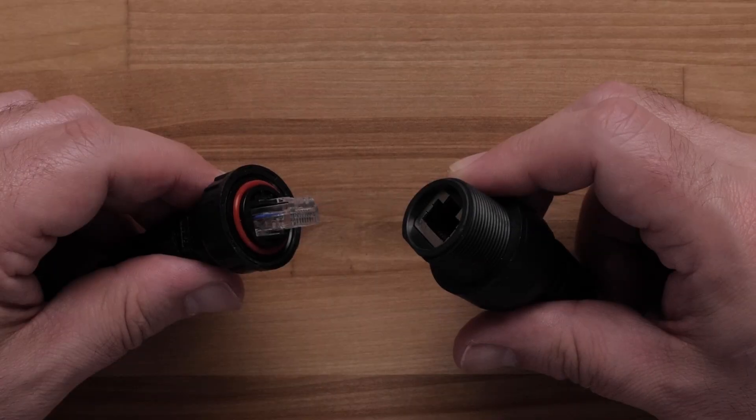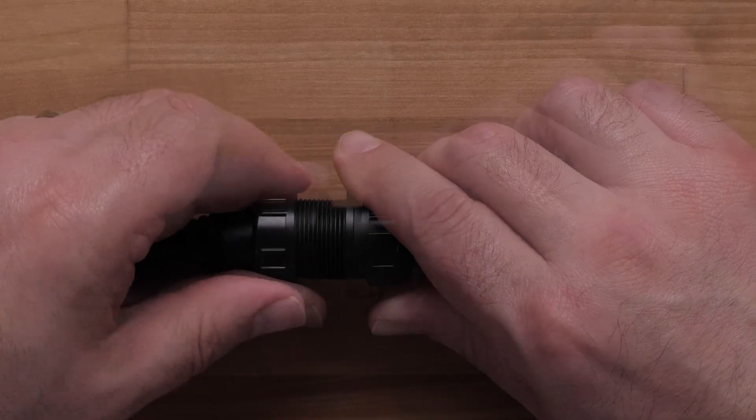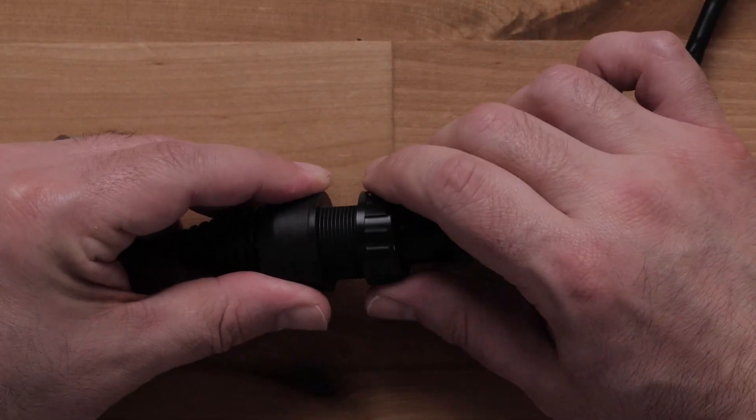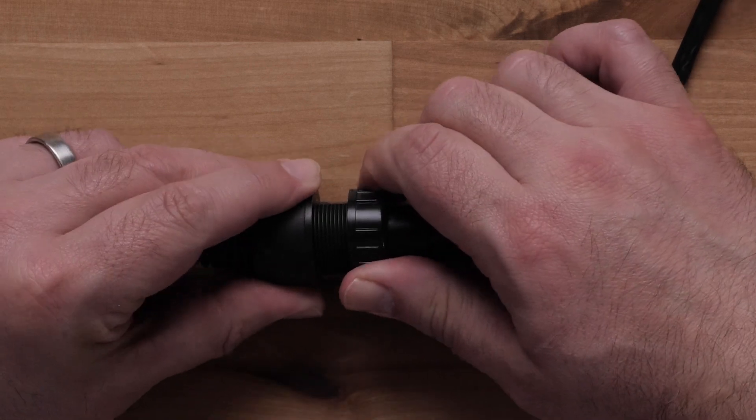Lastly, connect the Garmin BlueNet network adapter cables to each end of the terminated ethernet cable. You can now connect the assembled custom Garmin BlueNet network cable to your Garmin BlueNet devices.